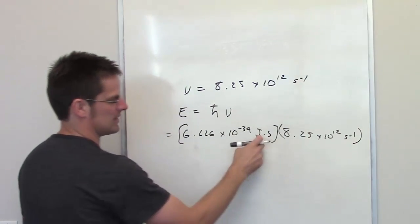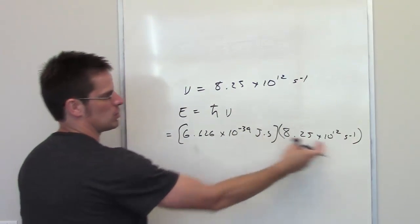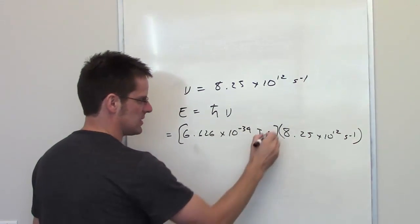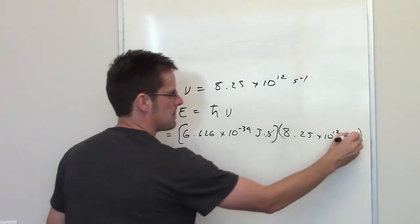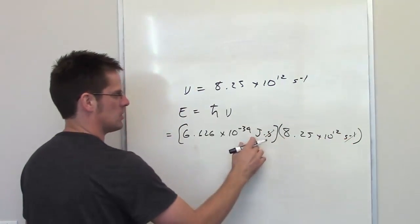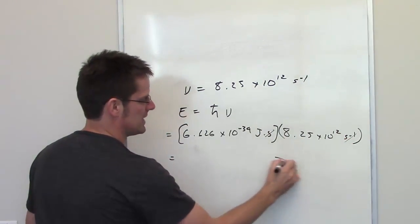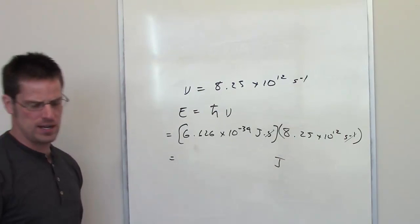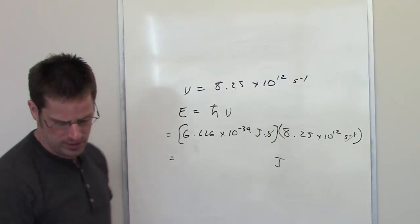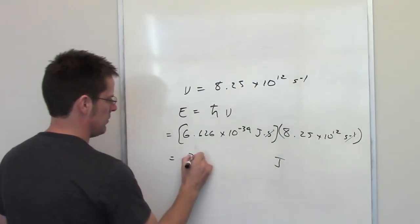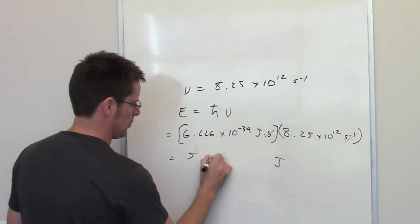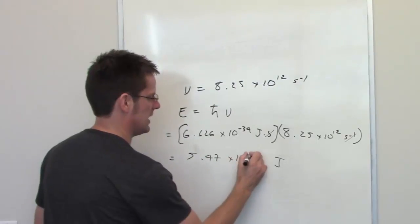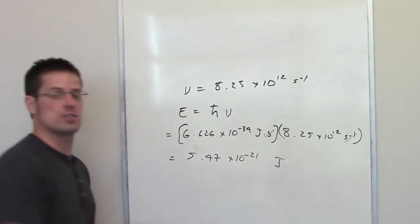You'll notice the inverse seconds, which is really seconds in the denominator, cancel out these seconds. So you're left with units of joules, which are indeed units of energy. You throw that in your calculator, and the final answer comes out to be 5.47 times 10 to the negative 21st joules.